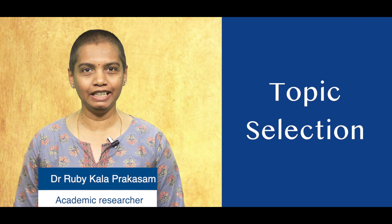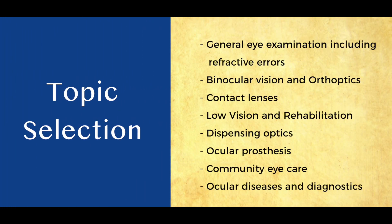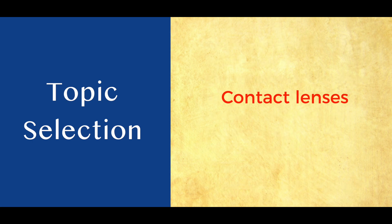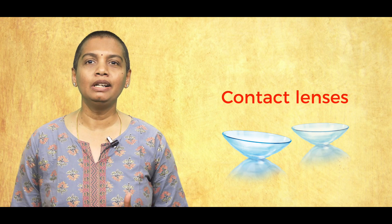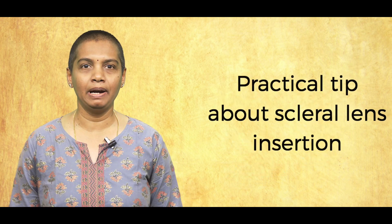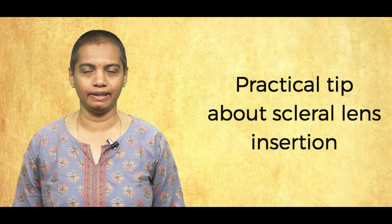Now Ruby will take you through the process of how to make these pearls using a previously published clinical pearl as an example. For creating pearls, the first step is to select one topic or theme from the list of core optometry topics. For example, I have selected the theme of contact lenses and want to create a clinical pearl to share a practical tip about scleral lens insertion.